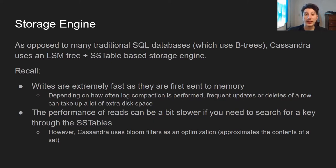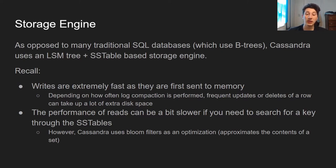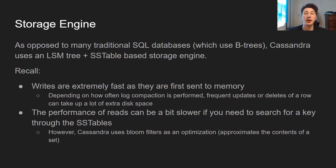Depending on how often log compaction is performed — and this uses a bunch of CPU resources in the background — updates can take a decent amount of extra disk space. Additionally, read performance compared to B-trees can be a little slower if you need to search through SSTables. But Cassandra uses an algorithm called BloomFilters, which approximates the contents of a set so you can guess if an SSTable contains a specific key, optimizing those reads.